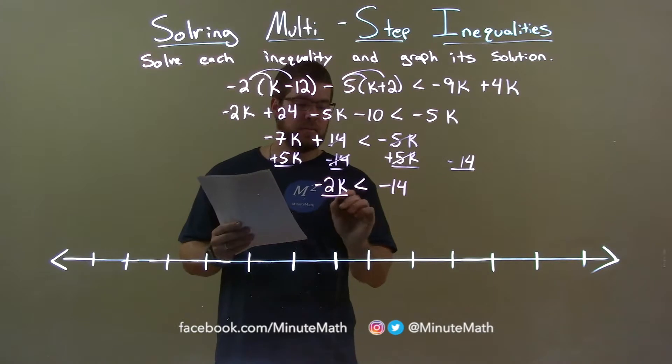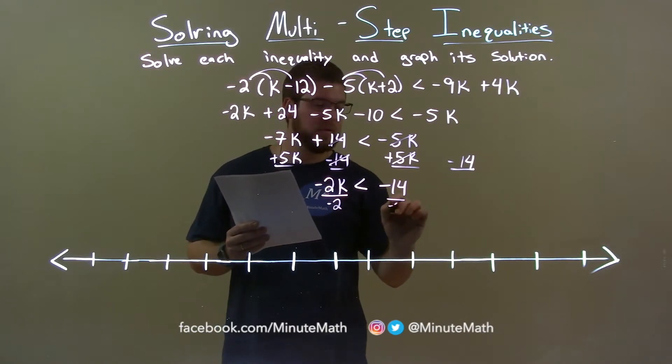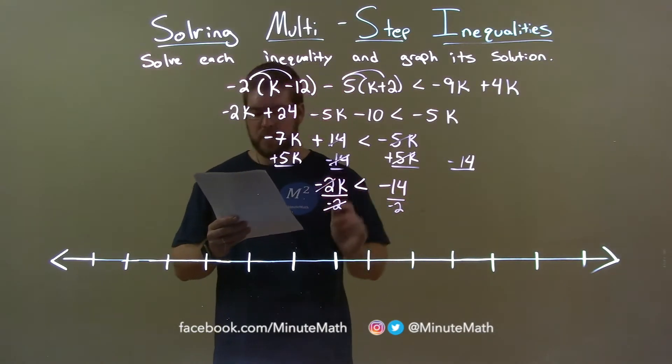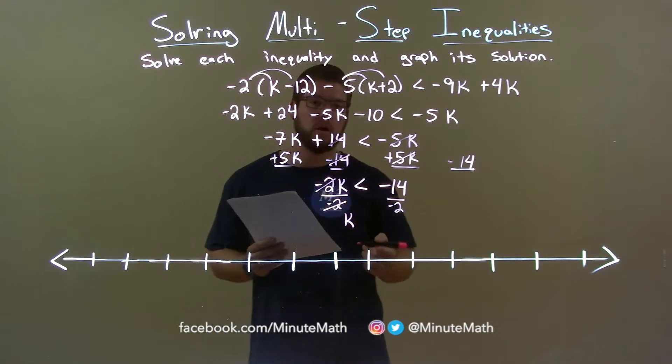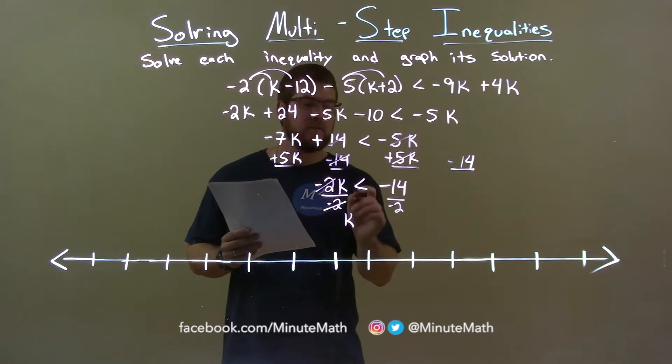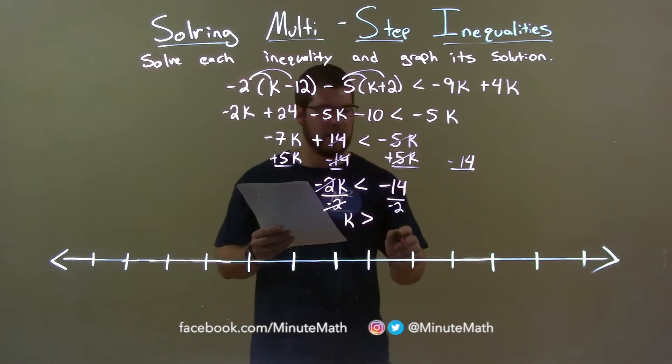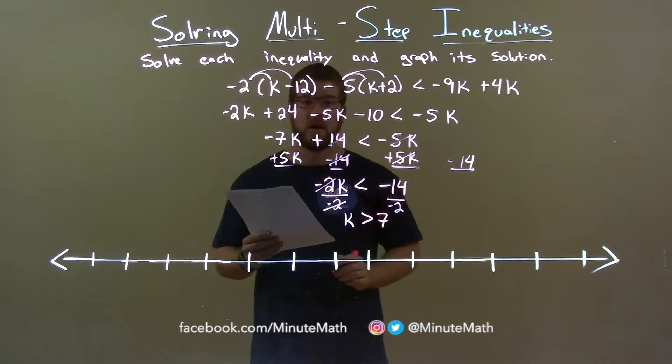To get k by itself still, I need to divide by negative 2 to both sides. Negative 2's cancel and k is now completely by itself. But since we divided over the inequality by a negative number, it switches from a less than sign to a greater than sign. And negative 14 divided by negative 2 is positive 7.